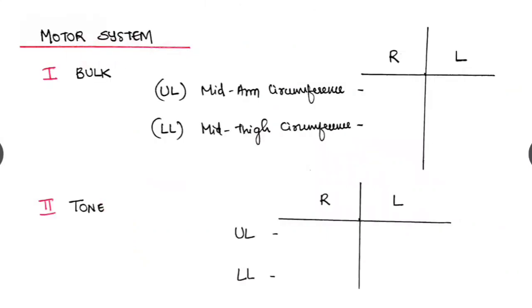Next is the motor system. Here we have to check the bulk, tone, power and reflexes. The bulk, we check the upper limb and the lower limb in the right and the left separately. Upper limb, we look the mid-arm circumference. The mid-thigh circumference in the lower limb.